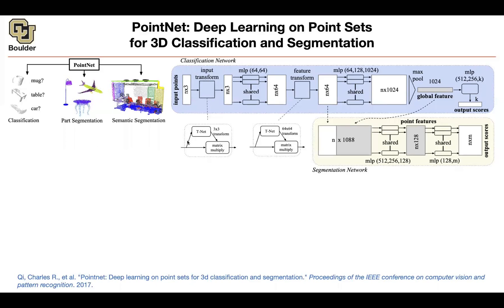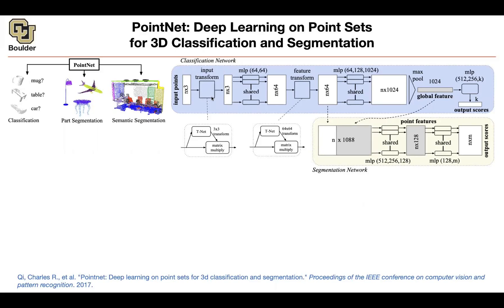The first layer uses an idea from spatial transformer networks: you take the input, map it through a neural network, and get a 3x3 transformation matrix with parameters a11, a12, a13, etc. Your input is N by 3. You multiply N-by-3 by this 3-by-3 matrix to get N-by-3 again. This transforms the point cloud — maybe into a better coordinate system, accounting for rotation or translation.